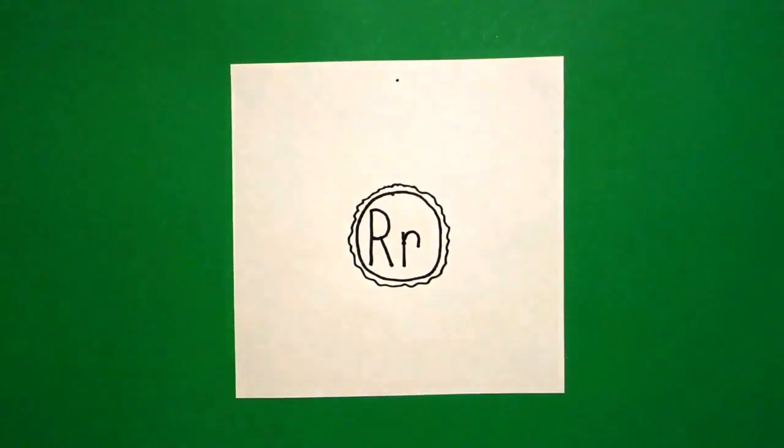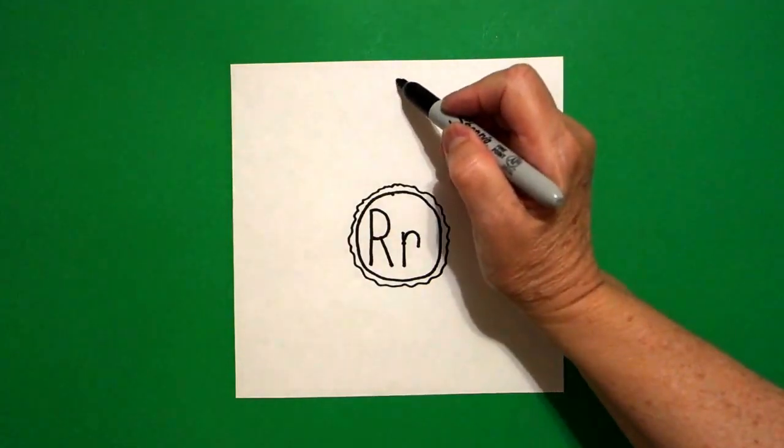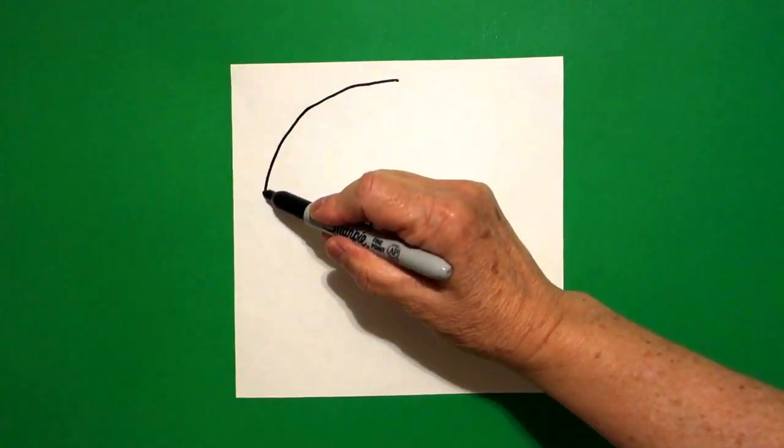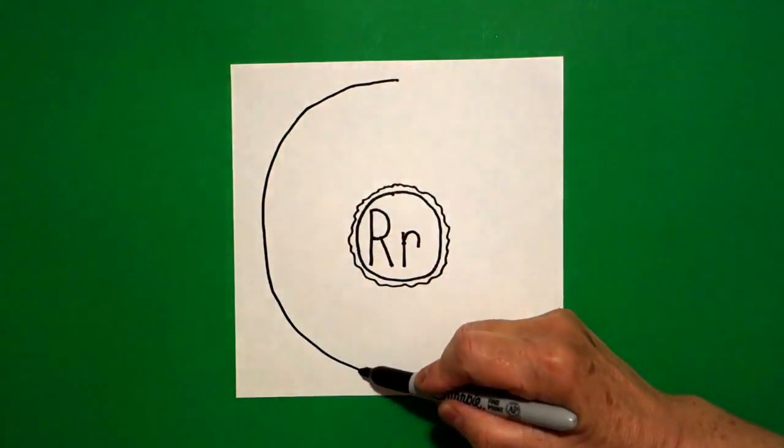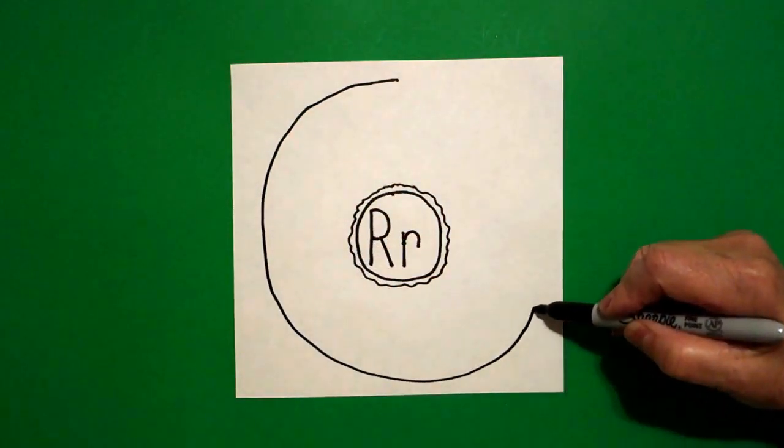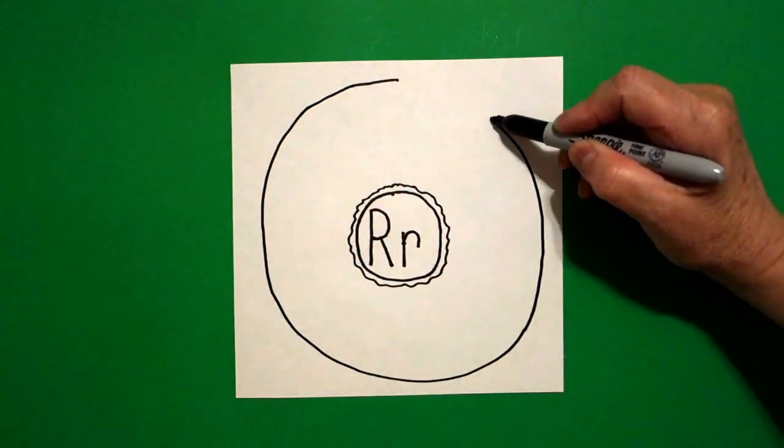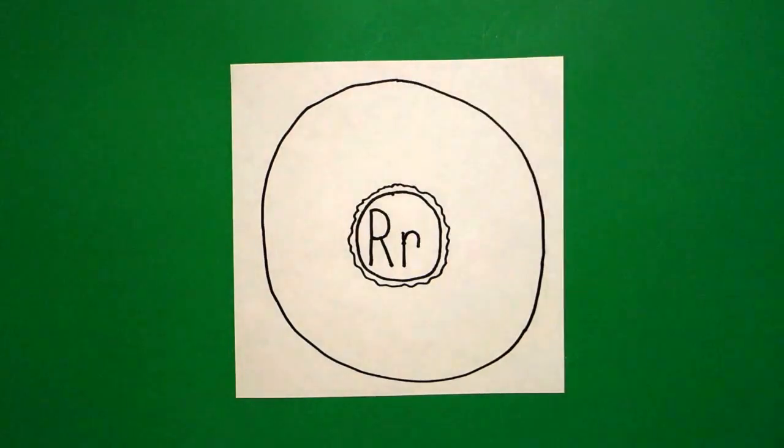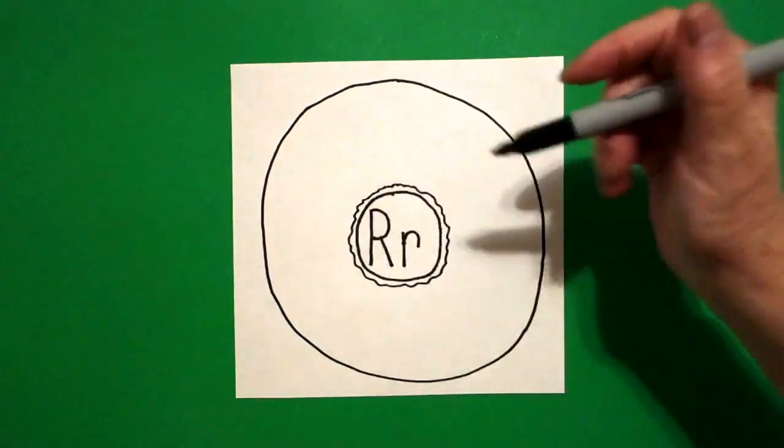I take three fingers from the top, put a dot, from the dot, we're going to draw a big curve line down, around, over, up, and connect.